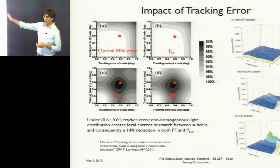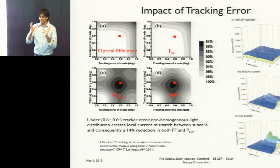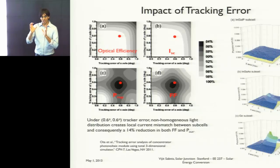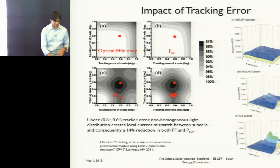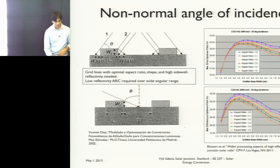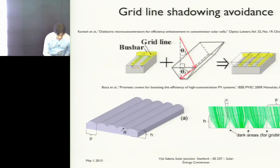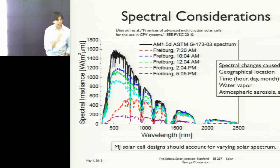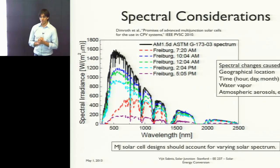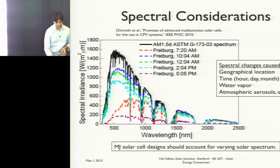Tracking error is another factor: as your tracker tries to stay pointed at the sun, the beam moves on the cell, and you can have transient losses in fill factor as well. One of the things that's very important is that your solar spectrum changes throughout the day and throughout the year.